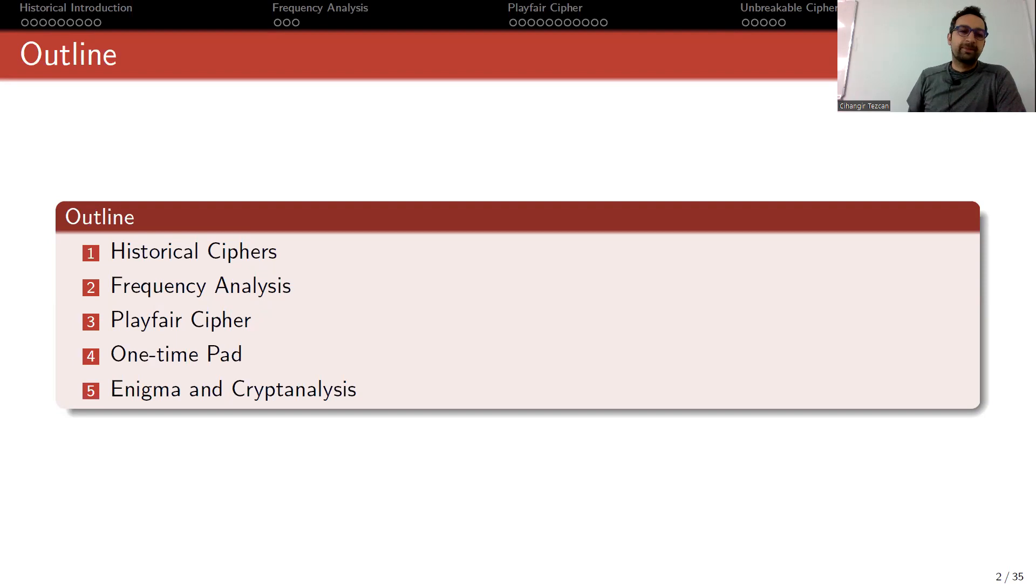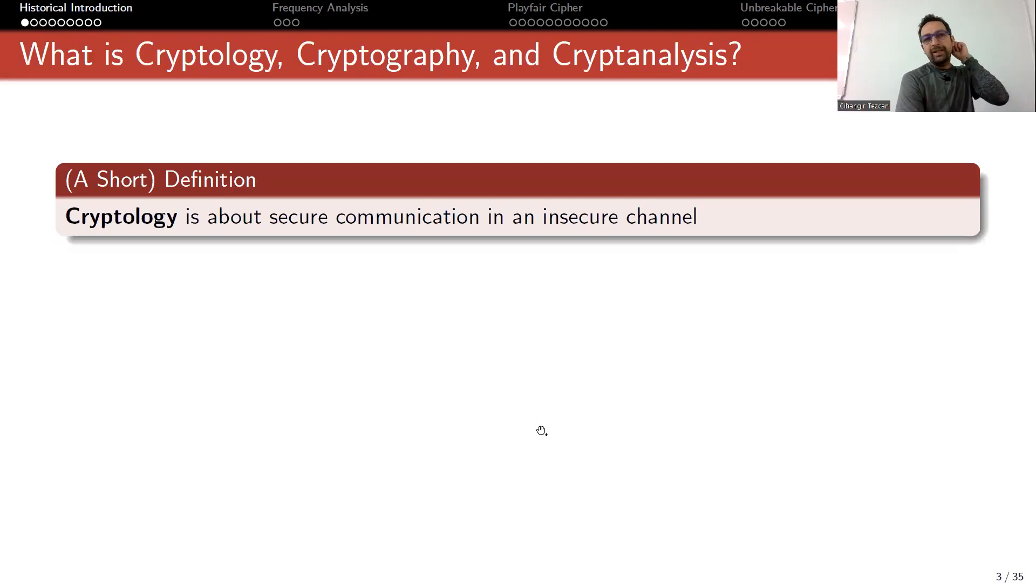I will show you a good way to break them using frequency analysis, then briefly mention Playfair cipher which was used in World War One. I'll talk about one-time pad, which is an unbreakable cipher. Then from pen and paper methods we move on to machines like Enigma, which is very famous if you've watched any Second World War movie. I'll briefly explain how British mathematicians broke them during the war.